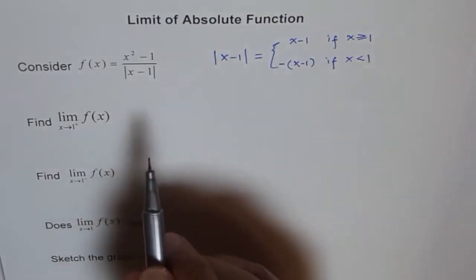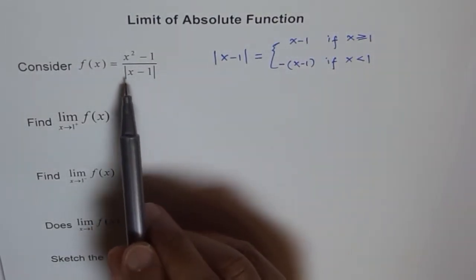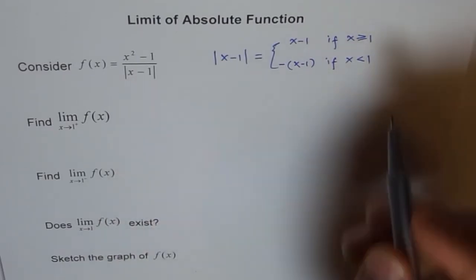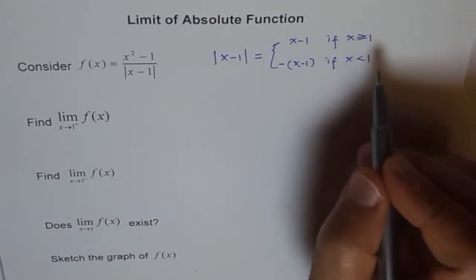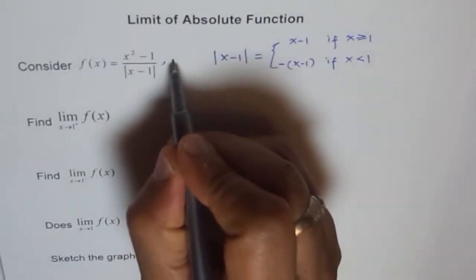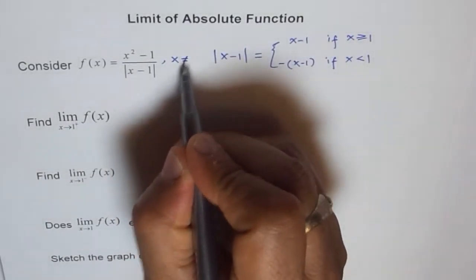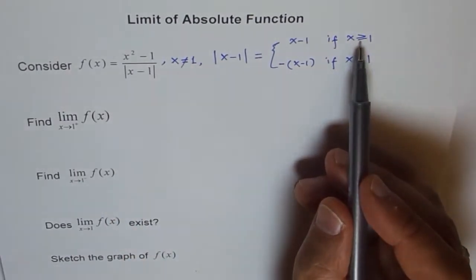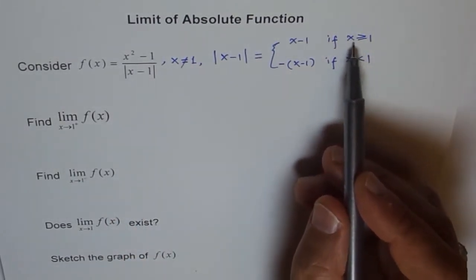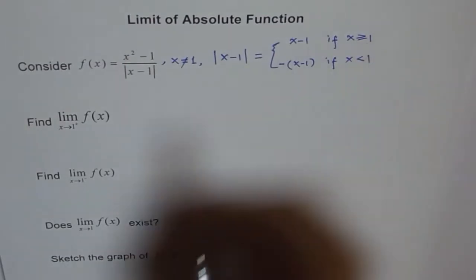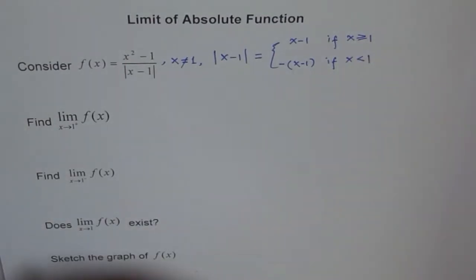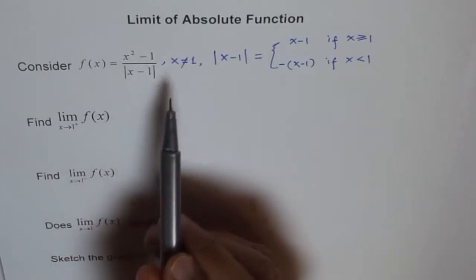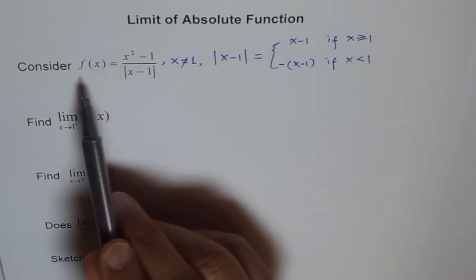One more thing to remember: since this expression is in the denominator, x cannot be equal to 1. So in the definition, we should strictly write x greater than 1 for the first piece. Anyway, we are just taking the definition here and putting that restriction on the function f(x).